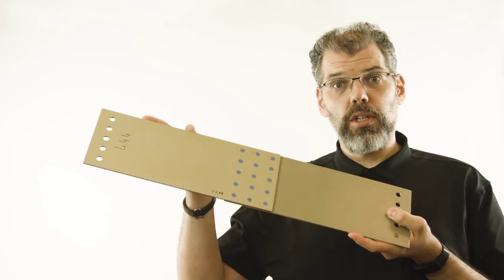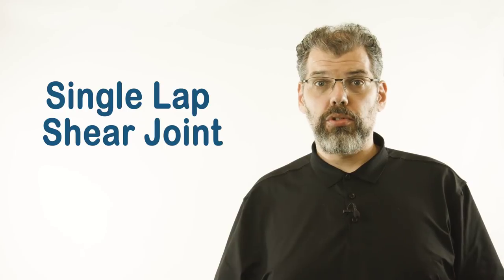We will center our discussion around the simplest form of a shear joint, a single overlap of sheets containing several rows of fasteners like the one shown here. This joint is known as a single lap shear joint.